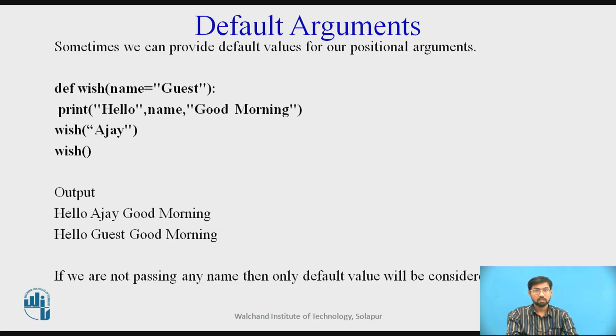So here if you observe, if we are not passing any name, then only default value will be considered. Here default value of Ajay is considered, and another name equals guest is mentioned in the defining function. We are not passing the same name as the defined function.